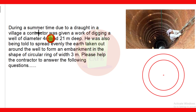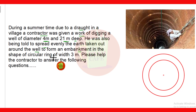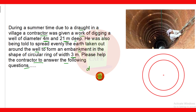Friends, here is the question. During a summer time due to a drought in a village, a contractor was given a work of digging a well of diameter 4 meter and 20 meter deep. He was also asked to spread the earth taken out evenly around the well to form an embankment in the shape of a circular ring of width 3 meter. Please help the contractor to answer the following questions. The diameter of the well is 4 meter.